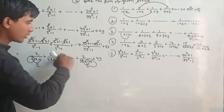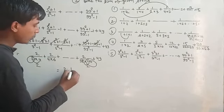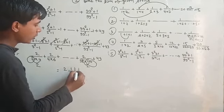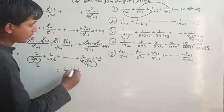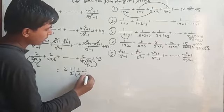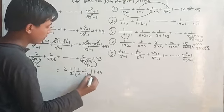So I can write this as well. Take two common. 1 upon 2, 1 upon 1 minus 1 upon 2. So 1 upon 1, and the last term you have is 1 upon 100.